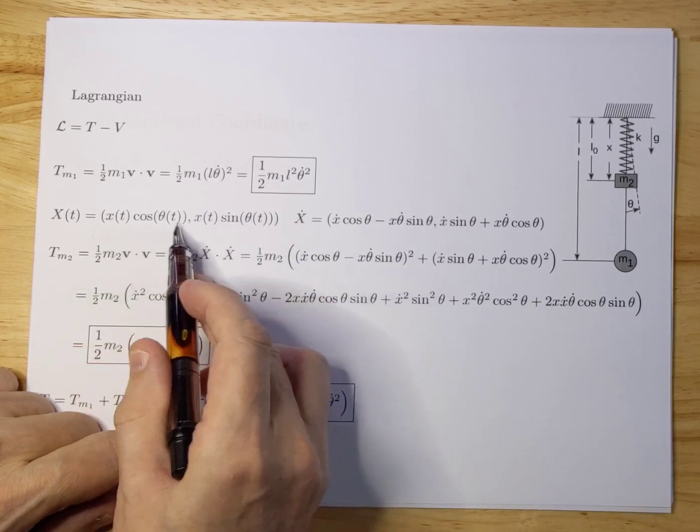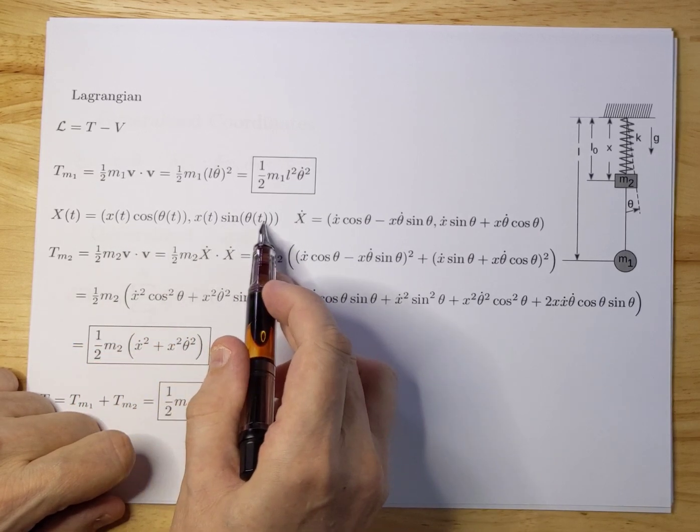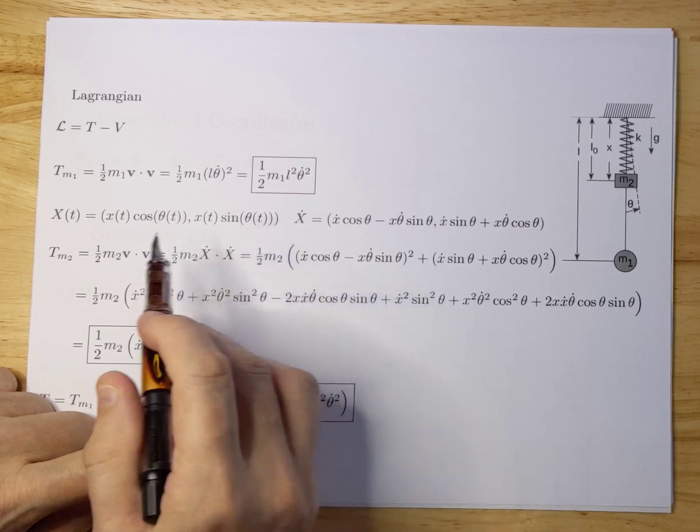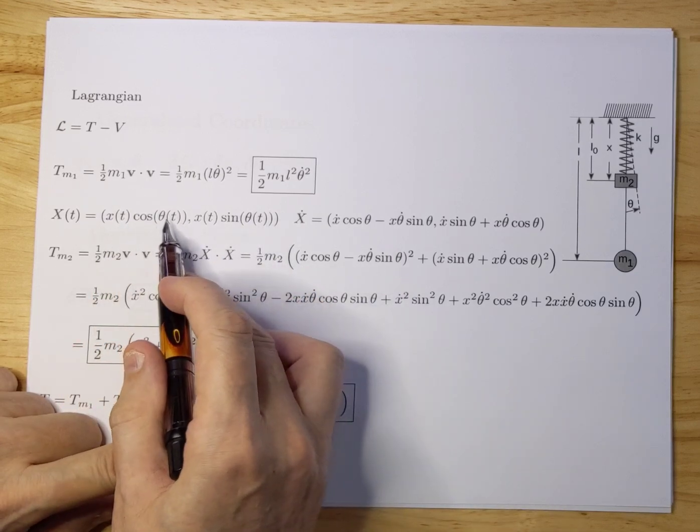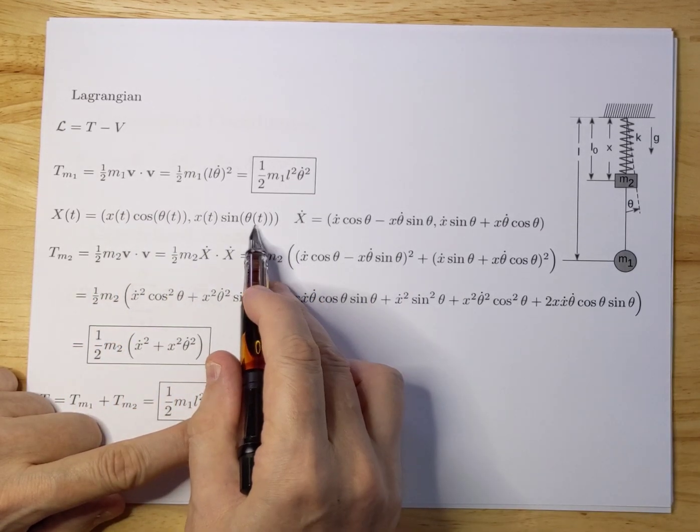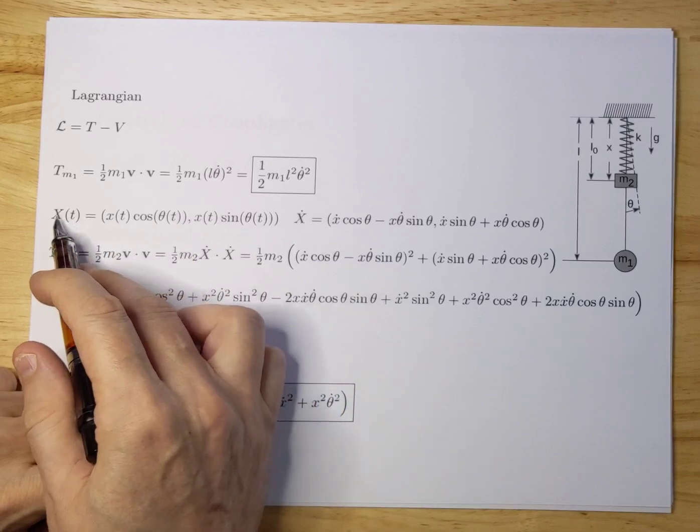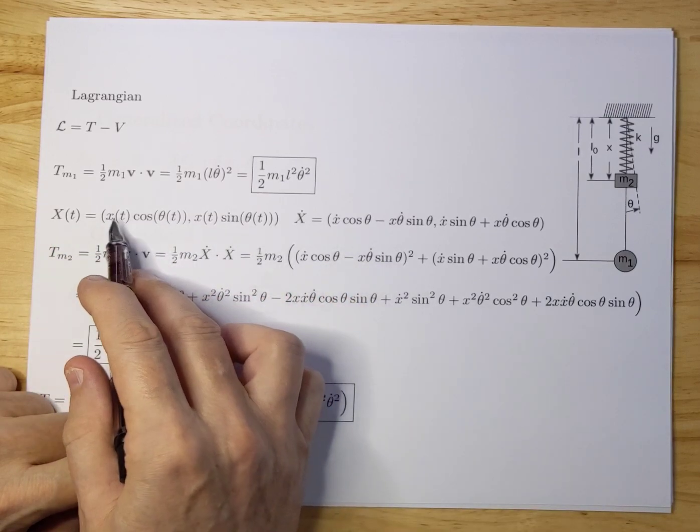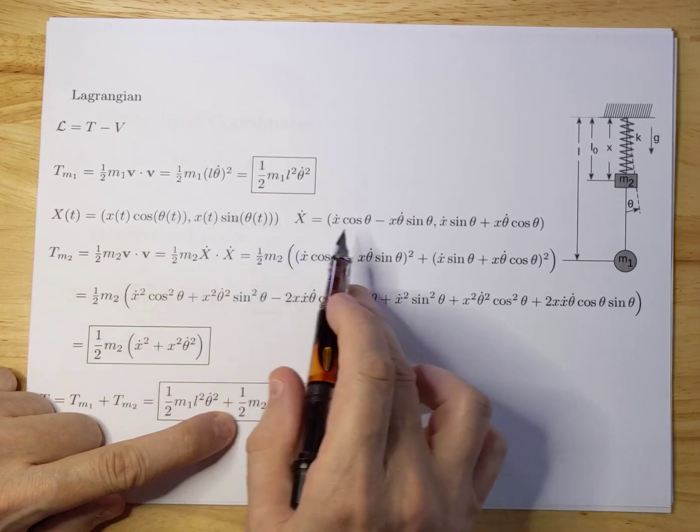You see that both X and theta are depending on t. So once you differentiate to get the speed, you have to differentiate to both X and to theta.